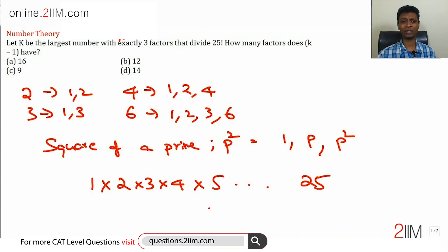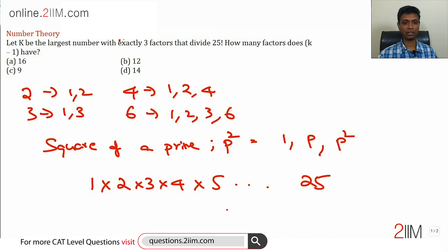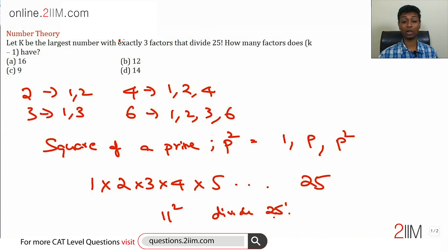Take a prime like 7. What is the highest power of 7 that divides 25 factorial? There is 7, 14, and 21 — so 7³ divides 25 factorial. But we are not interested in a cube of a prime; we are interested in only the square of a prime. For 11: multiples are 11 and 22, so there are two 11's — meaning 11² divides 25 factorial, but 11³ does not.